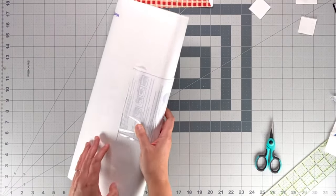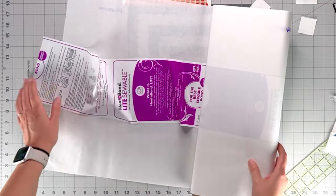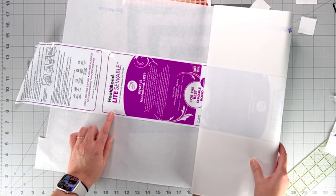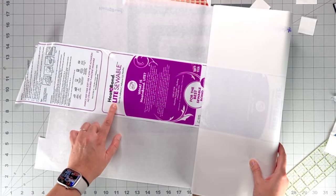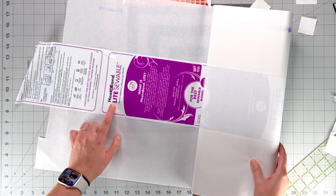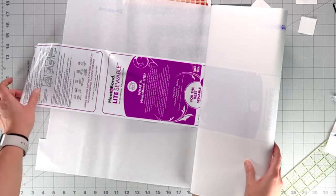This is the product that I use all the time for raw edge applique. It's called Heat and Bond. The light is the one that you can sew over, and I always sew my applique down. So I use the light.